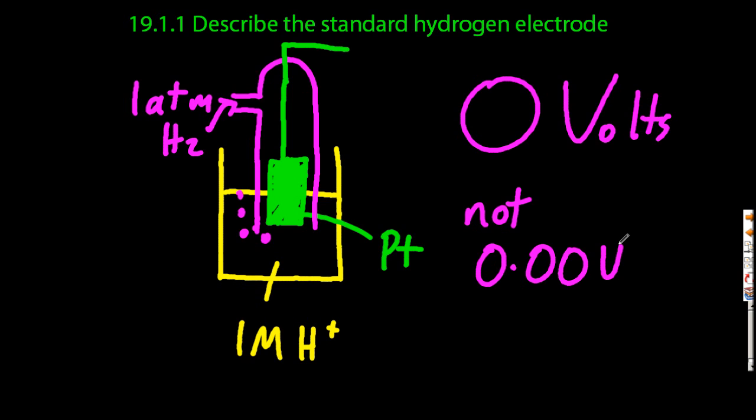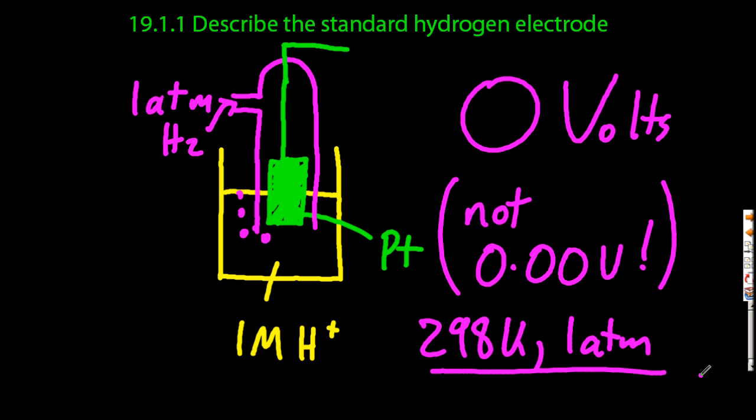0.00 is three sig figs, by definition it's zero. The IB's wrong, not to worry. And it's at STP, so 298 Kelvin and one atmosphere. There's your standard hydrogen electrode.